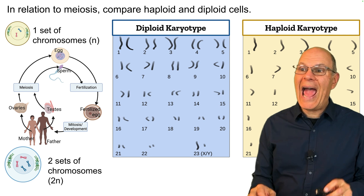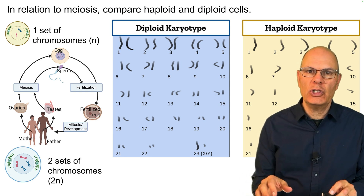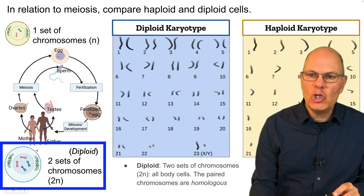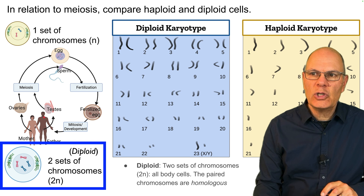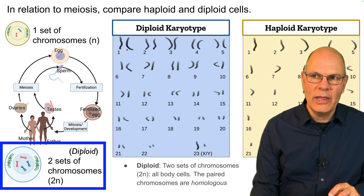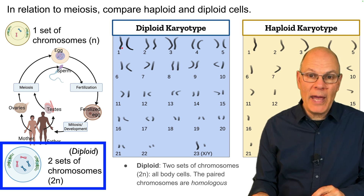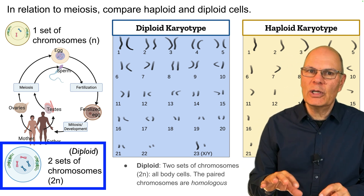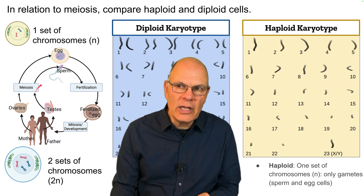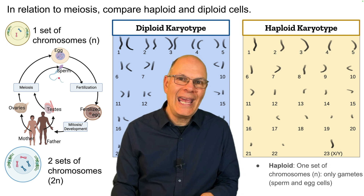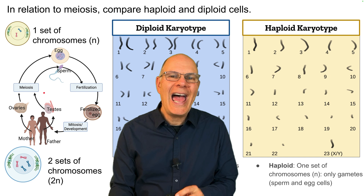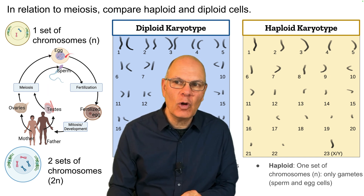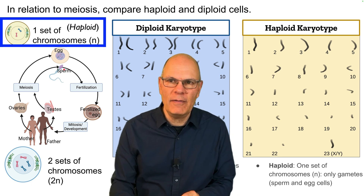In relation to meiosis, compare haploid and diploid cells. These are super important terms for understanding meiosis. Parents have two sets of chromosomes in all of their body cells, with the exception of their gametes. Those chromosomes are paired — for example, here's chromosome one, there are two of them; here's chromosome two, there are two of them. One was inherited from one parent, one was inherited from the other. Those pairs are said to be homologous. When parents pass on their chromosomes to the next generation, they can't pass all of them on, because the chromosome number would double in every generation. So what happens in meiosis is a halving of the number of chromosomes — called haploid.